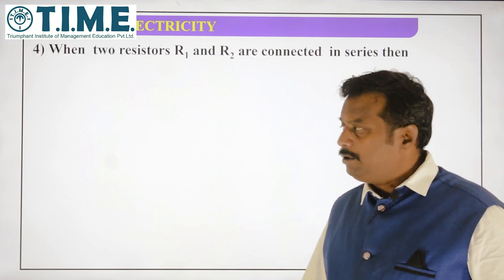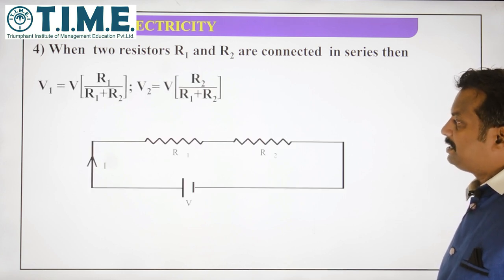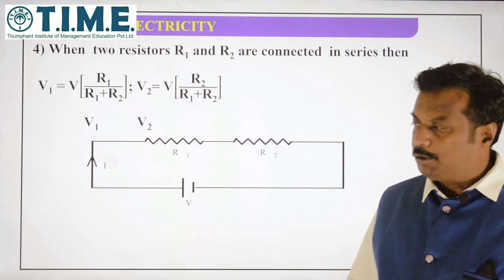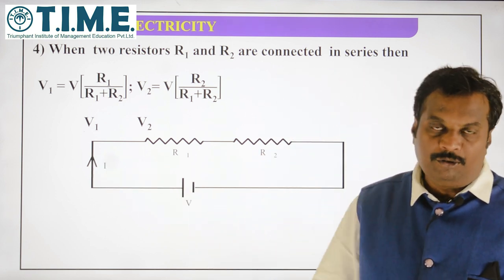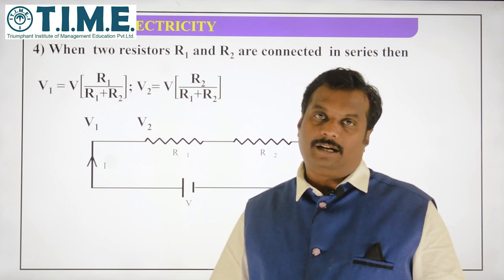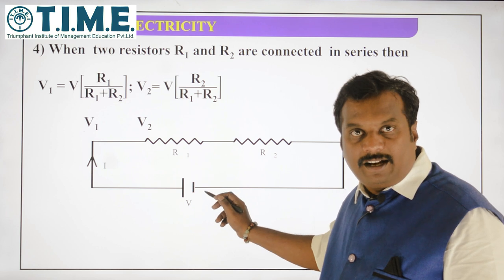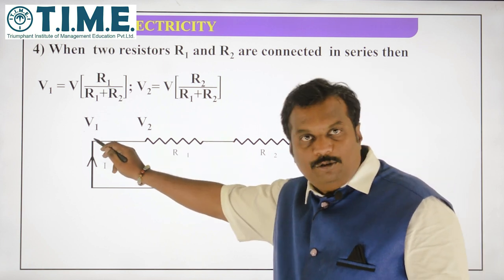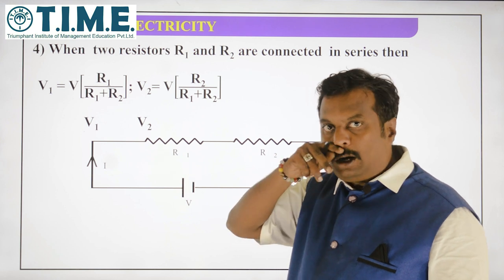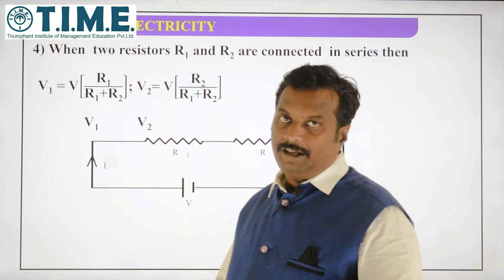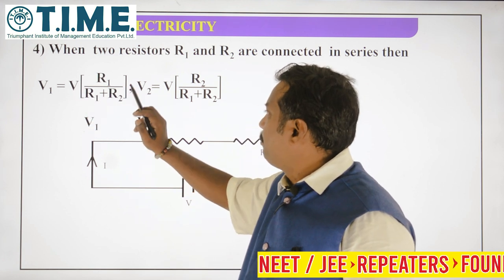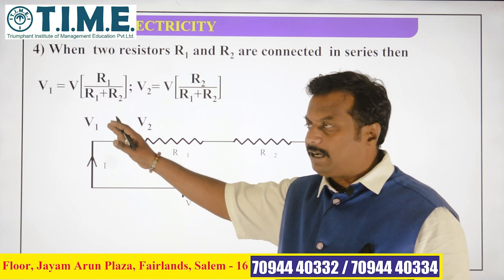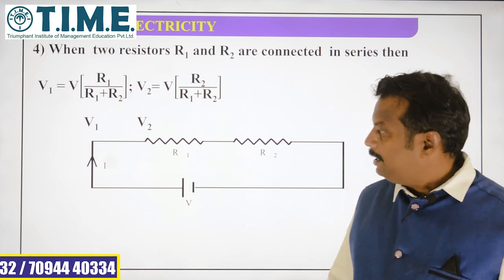When two resistors are connected in series with a battery of voltage V — conventional current flows from positive to negative, actual current from negative to positive. The voltage across R1 is V1 and across R2 is V2. The voltage divider rule gives: V1 = V × R1 / (R1 + R2) and V2 = V × R2 / (R1 + R2). I hope you are clear with this.